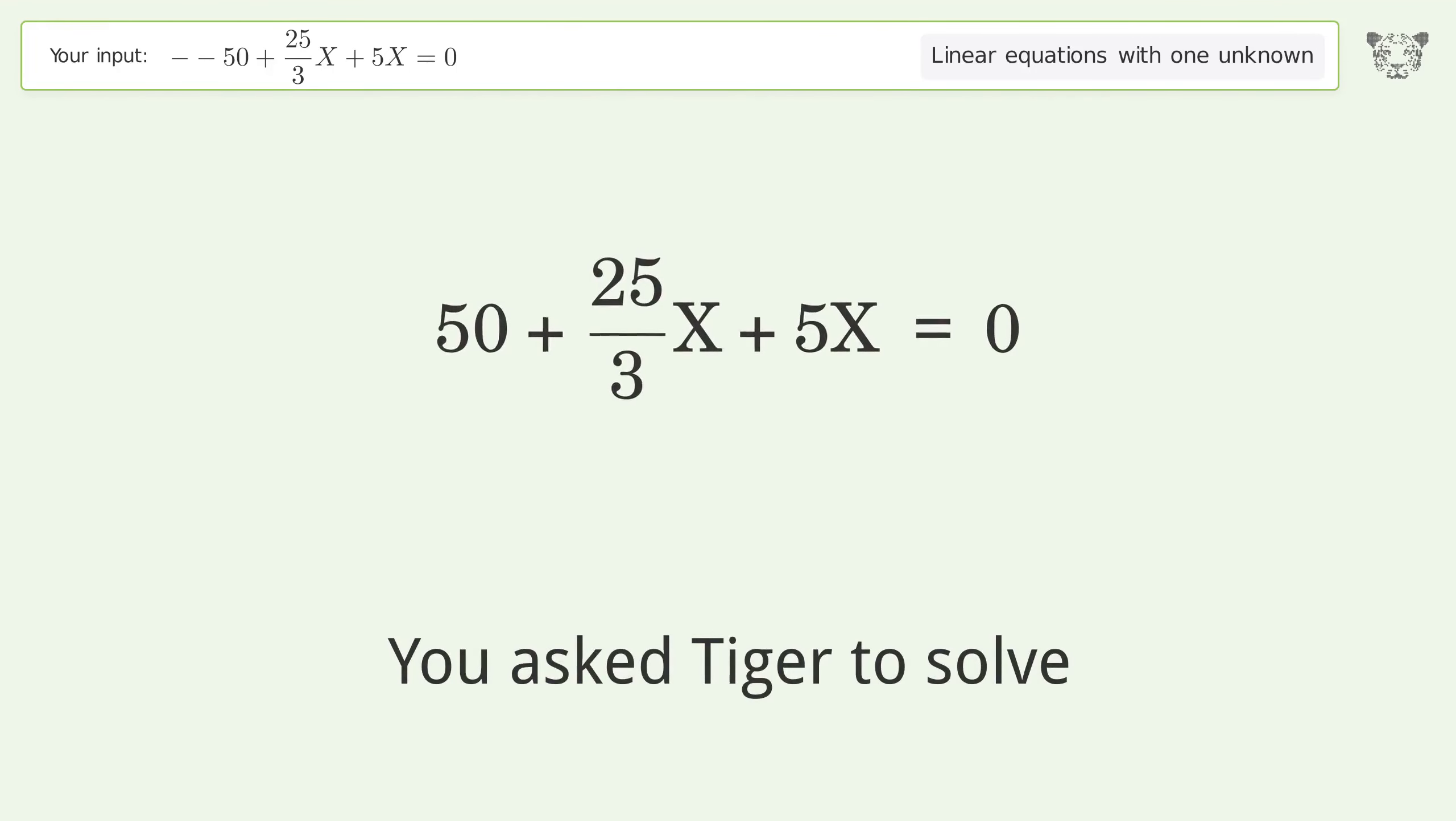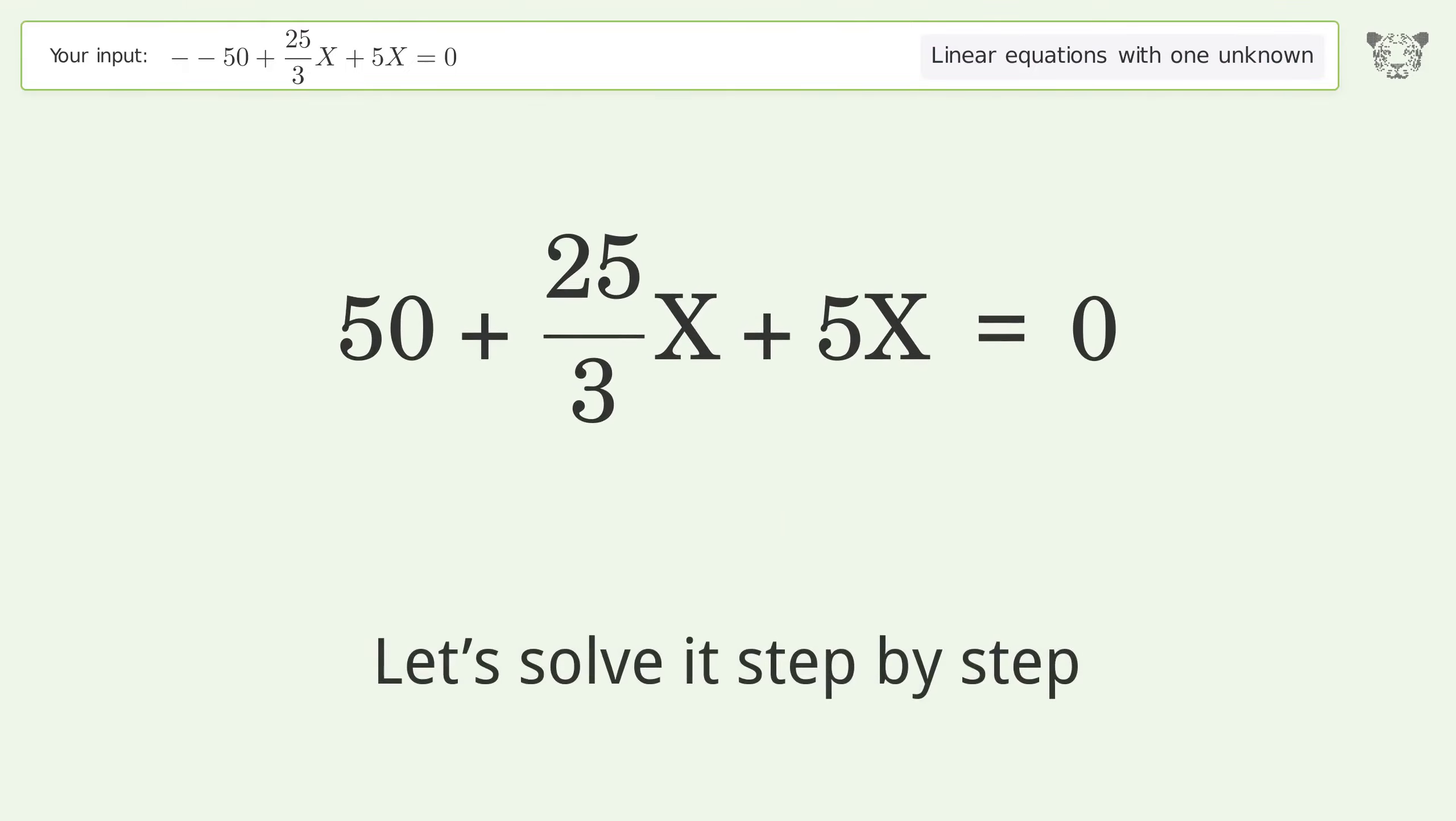You ask Tiger to solve this. This deals with linear equations with one unknown. The final result is X equals negative 15 over 4. Let's solve it step by step. Simplify the expression, group like terms.